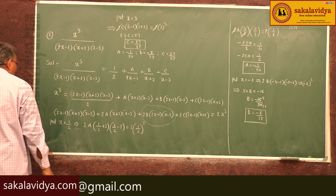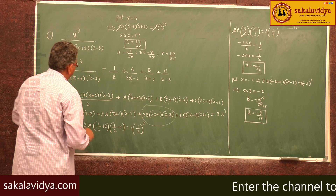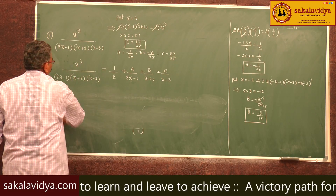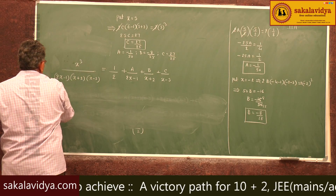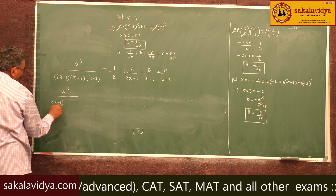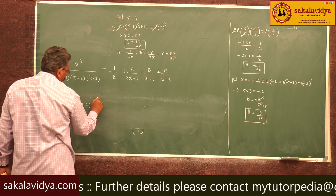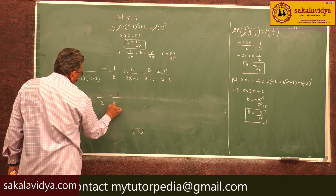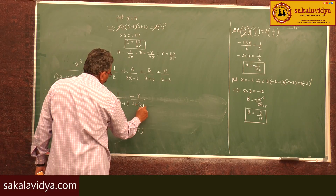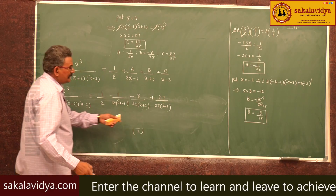Therefore the partial fractions of x³ / [(2x-1)(x+2)(x-3)] are: 1/2 + (-1/50)/(2x-1) + (-8/25)/(x+2) + (27/25)/(x-3). These are the partial fractions.